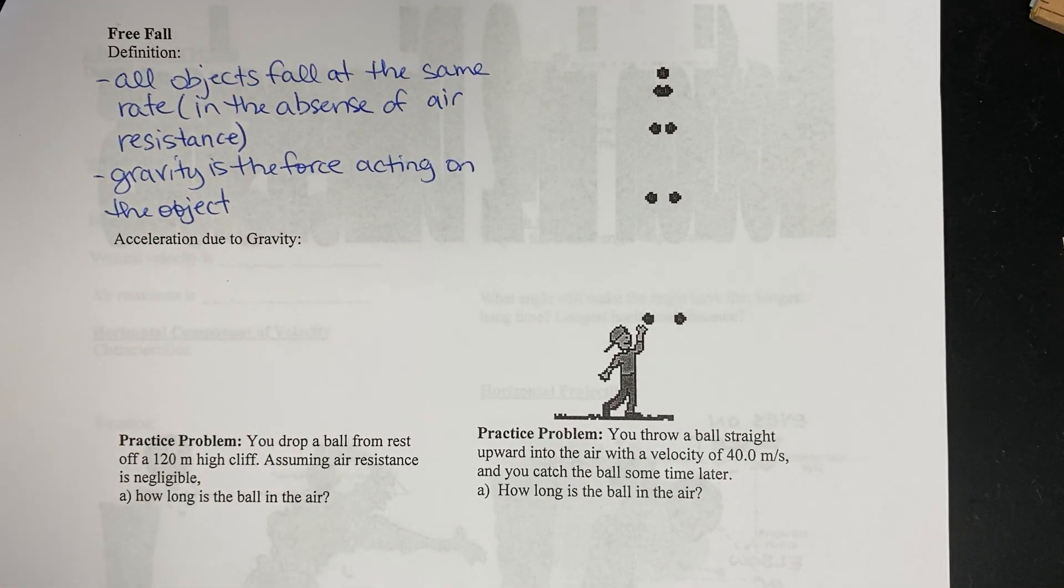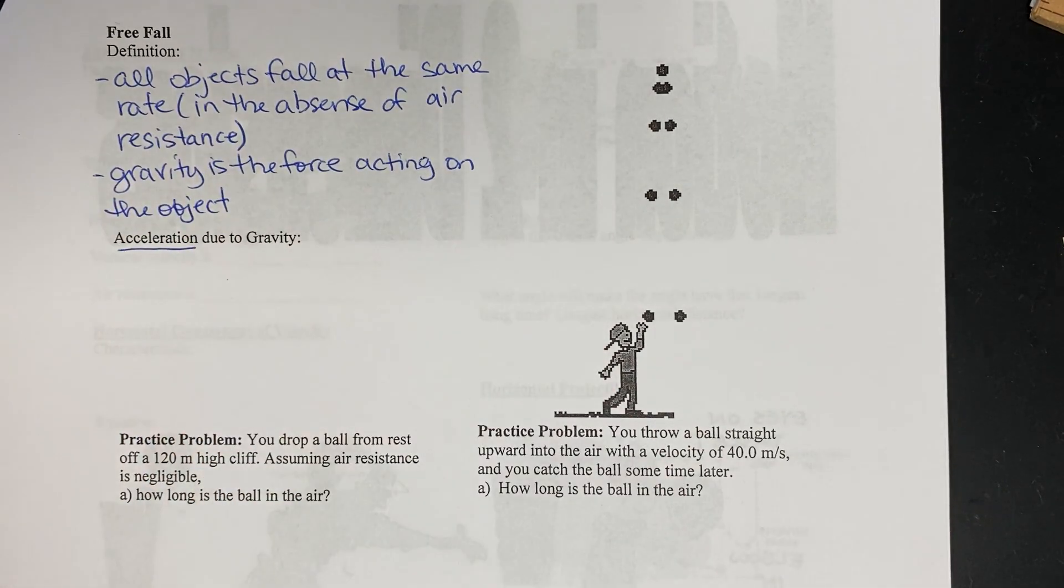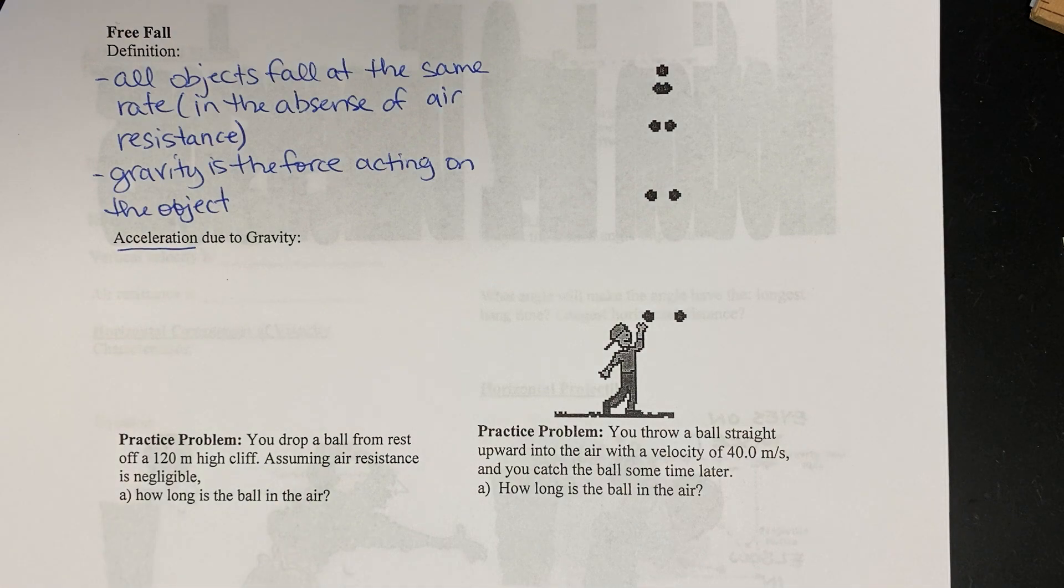Okay, now the rate at which things fall is called the acceleration due to gravity. Again, I want to stress that this is the acceleration due to gravity. This is not gravity. The force of gravity is something else. This is the acceleration due to gravity.